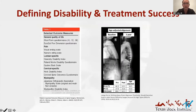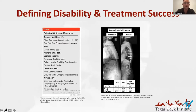Traditionally, spine patients have been evaluated by two primary methods: static imaging and patient reported outcome measures. The radiographic assessments are useful in defining deformity and determining if alignment goals were achieved after surgical correction. However, they do not provide information on functionality, and such methods are a bit limited in disorders where radiographic alignment goals are less defined or relevant to the ultimate surgical outcome.